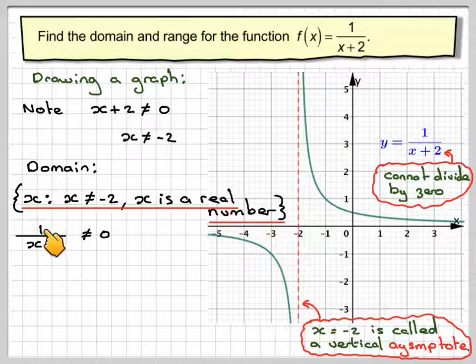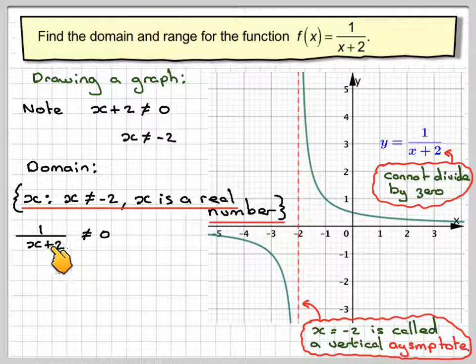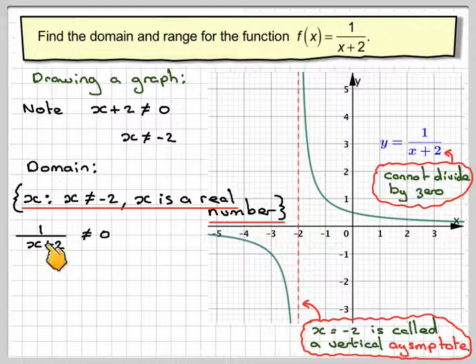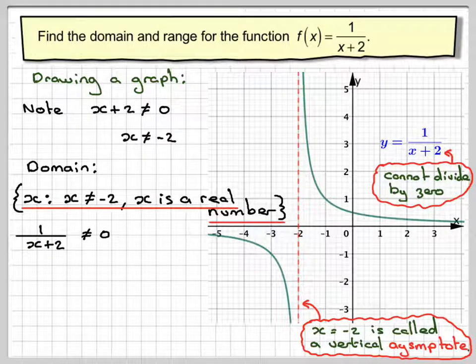So because it doesn't matter what value of x you take, 1 over x plus 2 will never be equal to 0. This is perhaps something you should learn and try to realize for yourselves.